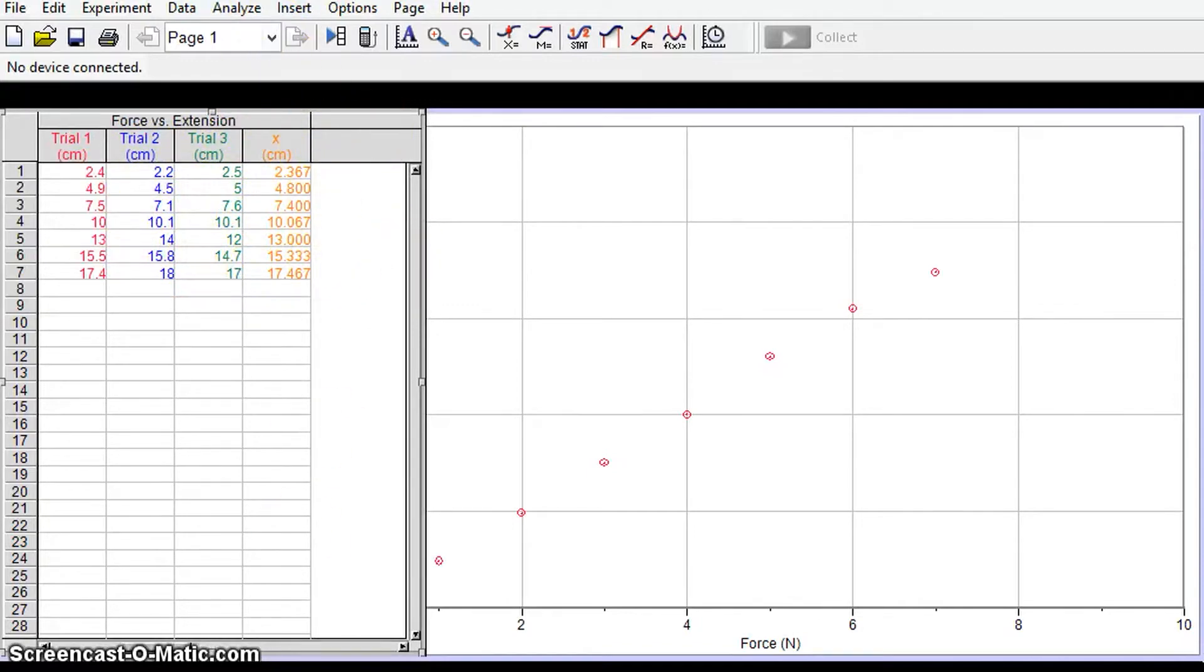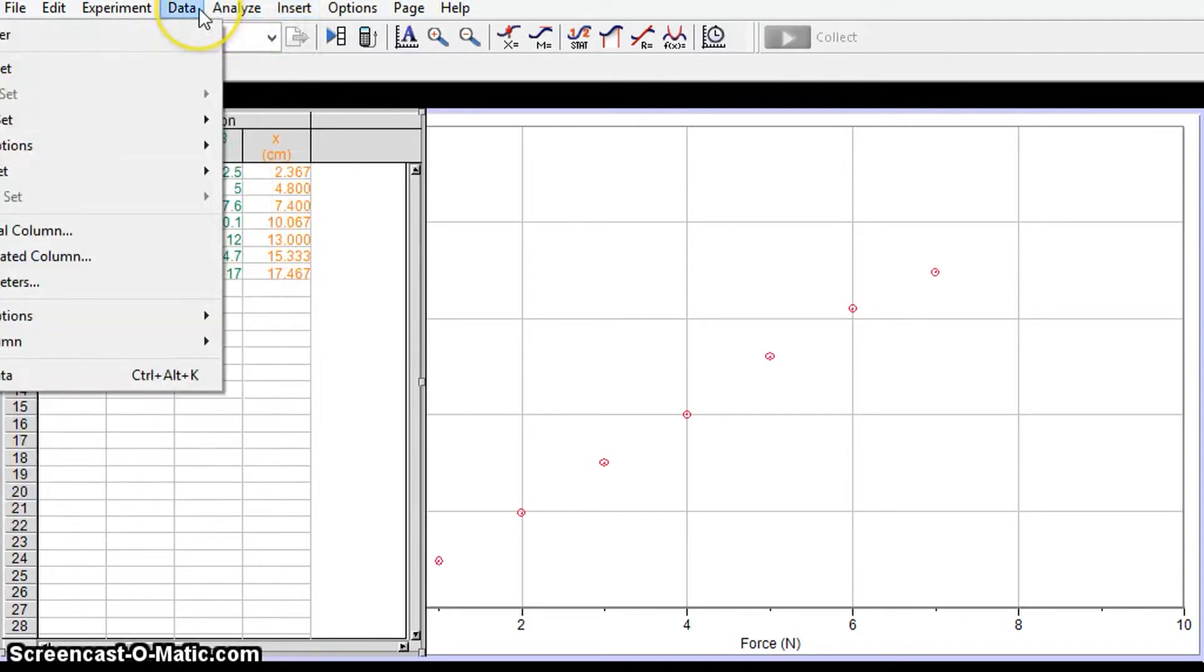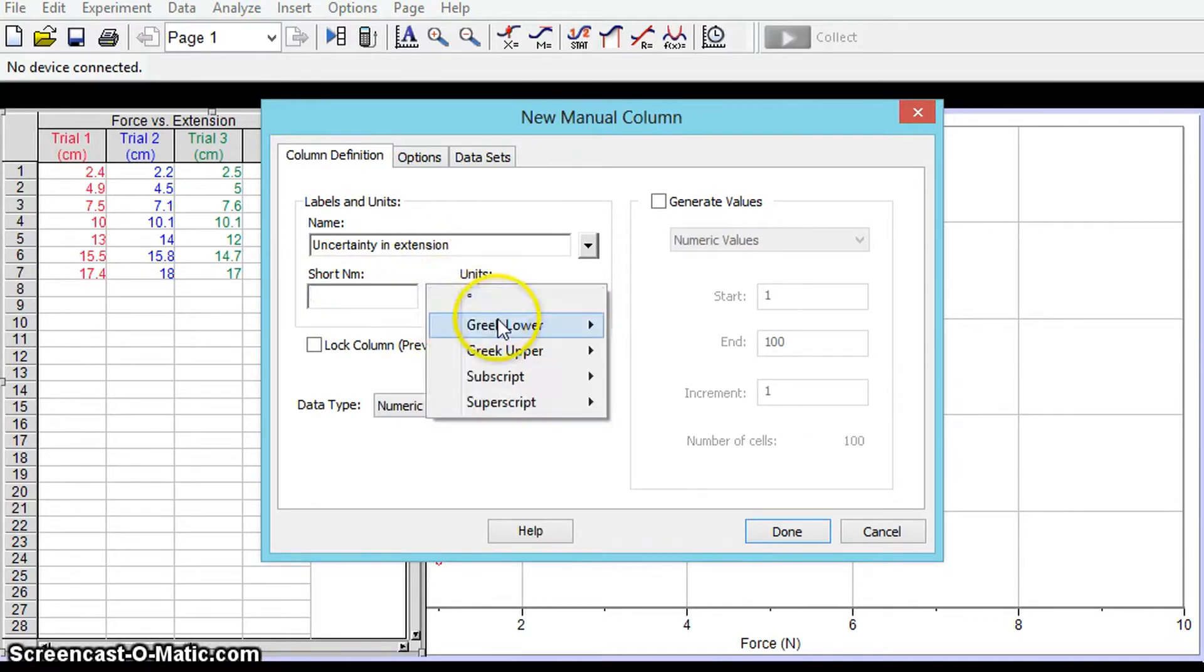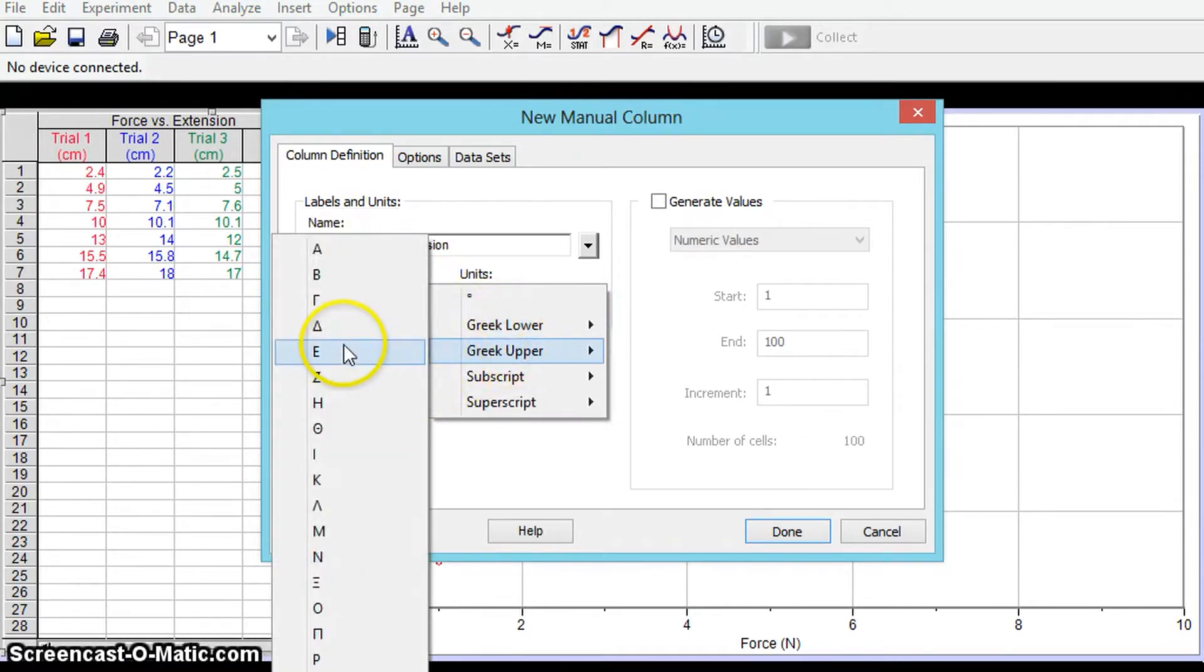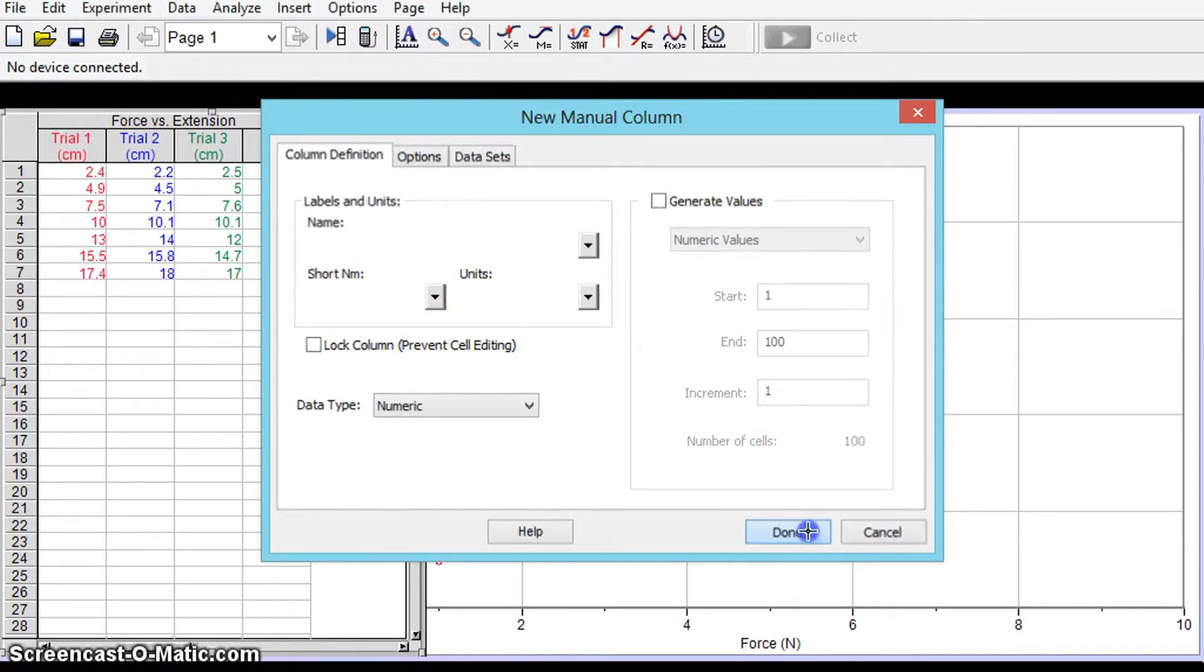So I'm going to insert a manual column here, I'm going to calculate this manually so I go to data new manual column and I'm going to call this uncertainty in extension with a short name I'm going to call this delta x, so Greek upper there's my delta x and the units are still centimeters.